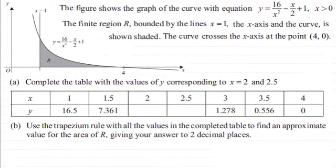Hi, now in this question we're told that the figure shows the graph of the curve with the equation y equals 16 over x squared minus x over 2 plus 1 for x greater than 0. We have this finite region R bounded by the lines x equals 1, the x-axis, and the curve is shown shaded. The curve also crosses the x-axis at this point here, 4, 0.